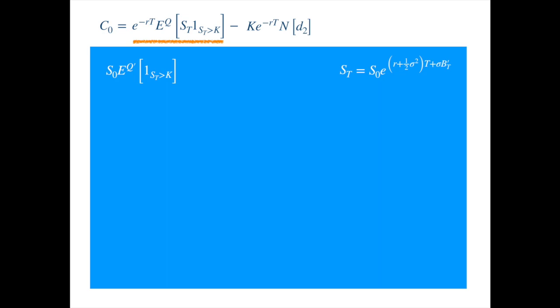As before, the expected value of the indicator function is the same as the probability of the indicator event, so we get... Substituting the expression for the terminal stock price, we get...